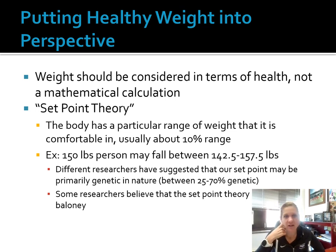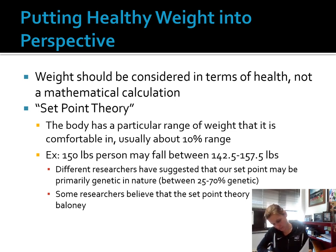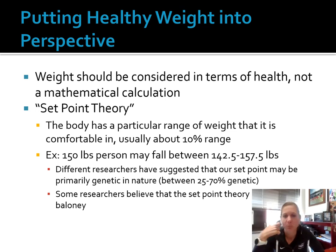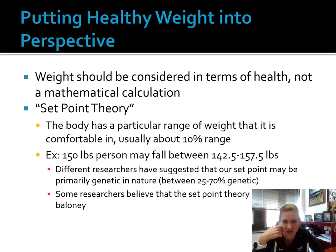What is the set point? Basically, the set point is the idea that the body has a particular weight range that it wants to be within — approximately a 10% range. So if I weighed 150 pounds, I would generally fall between 142 and 157 pounds at any given point. What determines what my set point is? Research suggests it's primarily genetic in nature — maybe you're born with a predisposition to weigh 150 pounds. Some researchers have shown support for this and others have said there's no true set point for an individual.